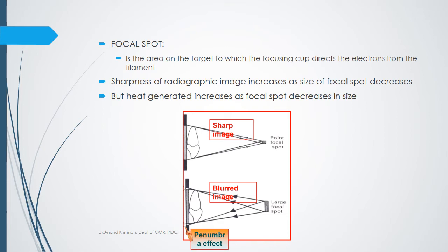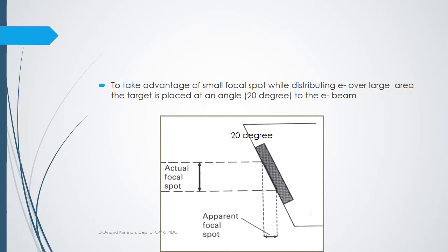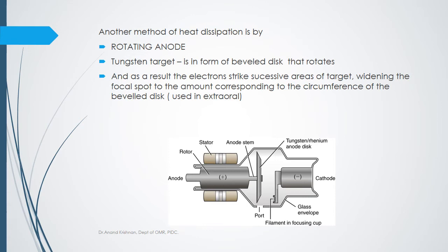The focal spot in the anode is the area where electrons strike. The smaller and sharper the focal spot, the sharper the image — analogous to the rods and cones in the retinal layer. A disturbed focal spot produces blurry images. Since x-rays cannot be deflected by electric or magnetic fields, the only way to angle the beam is by angling the entire apparatus. We take advantage of the focal spot with a 20-degree angulation to direct the beam through the vent.